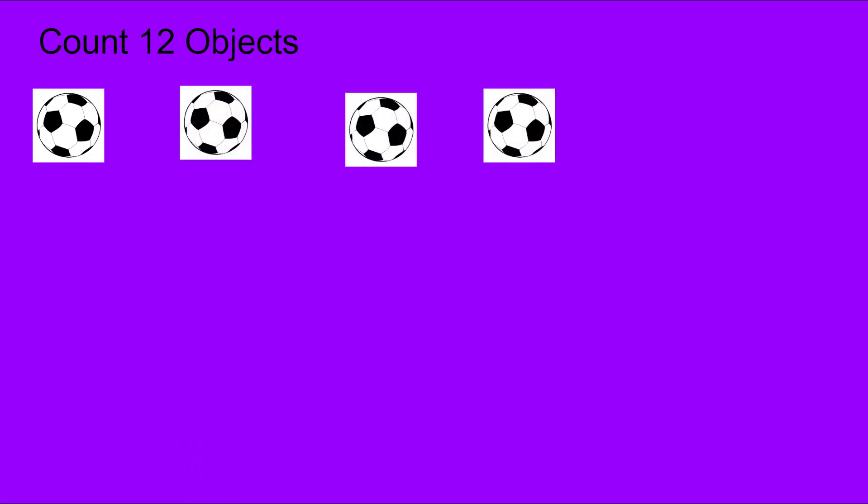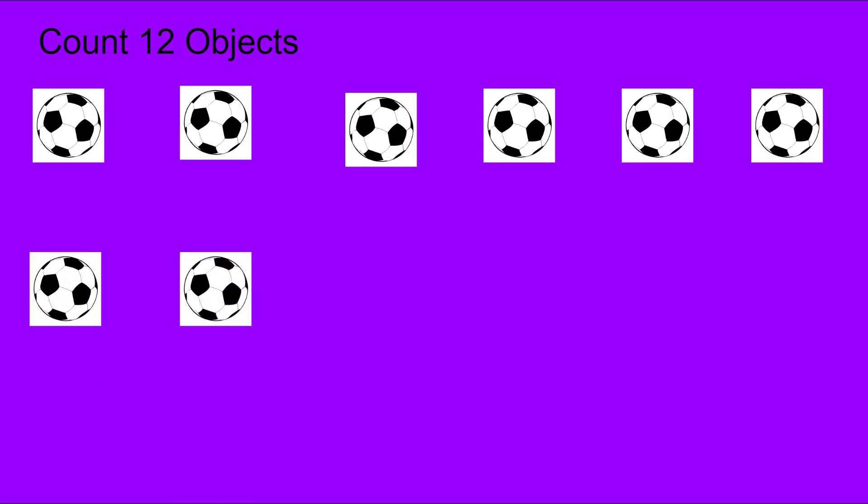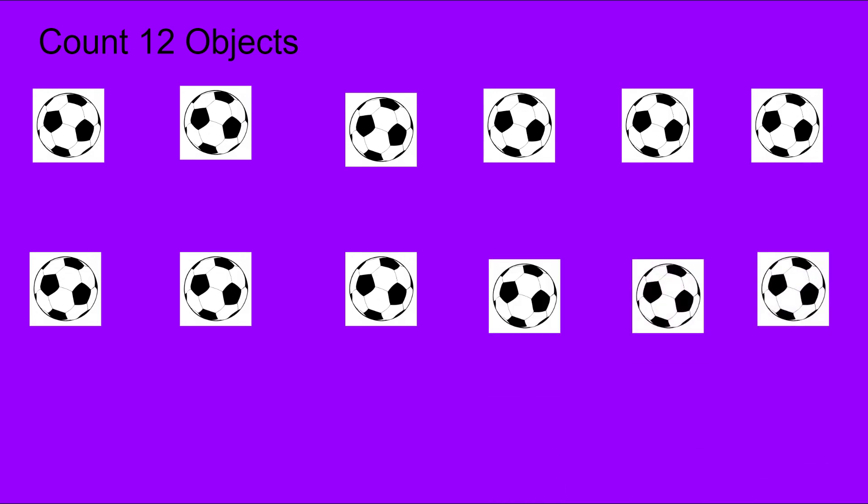Now we're going to count our 12 objects. We will line them up when we count them to make sure we count them one by one. Here we go. Count with me. 1, 2, 3, 4, 5, 6, 7, 8, 9, 10, 11, 12. We have 12 soccer balls.